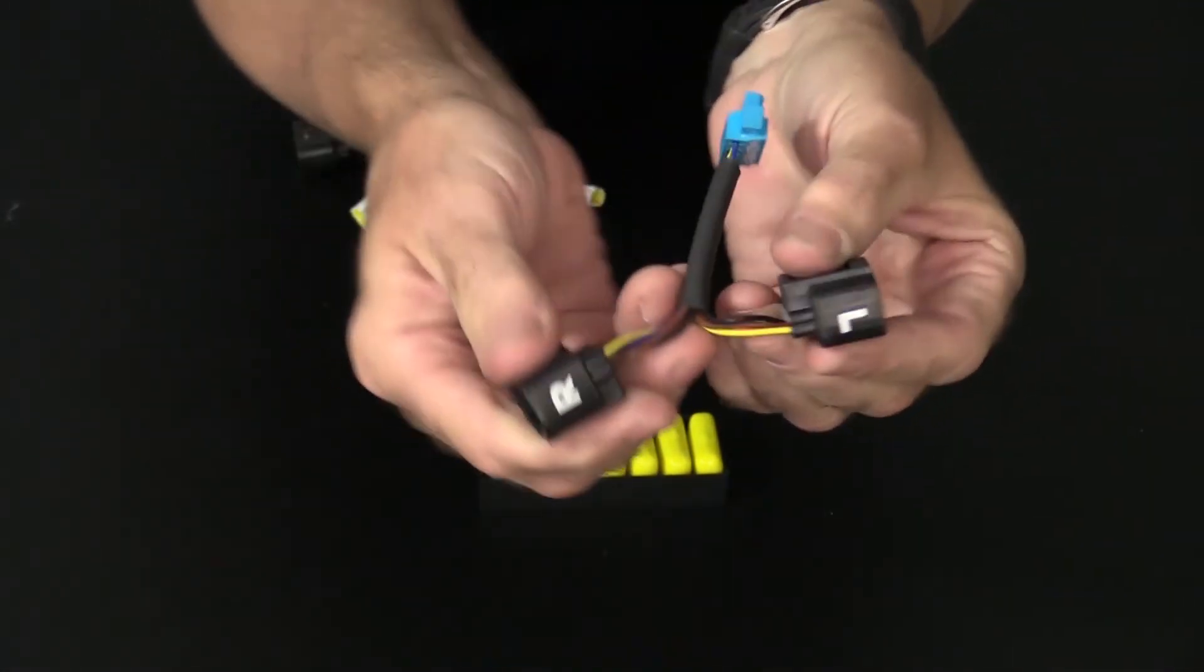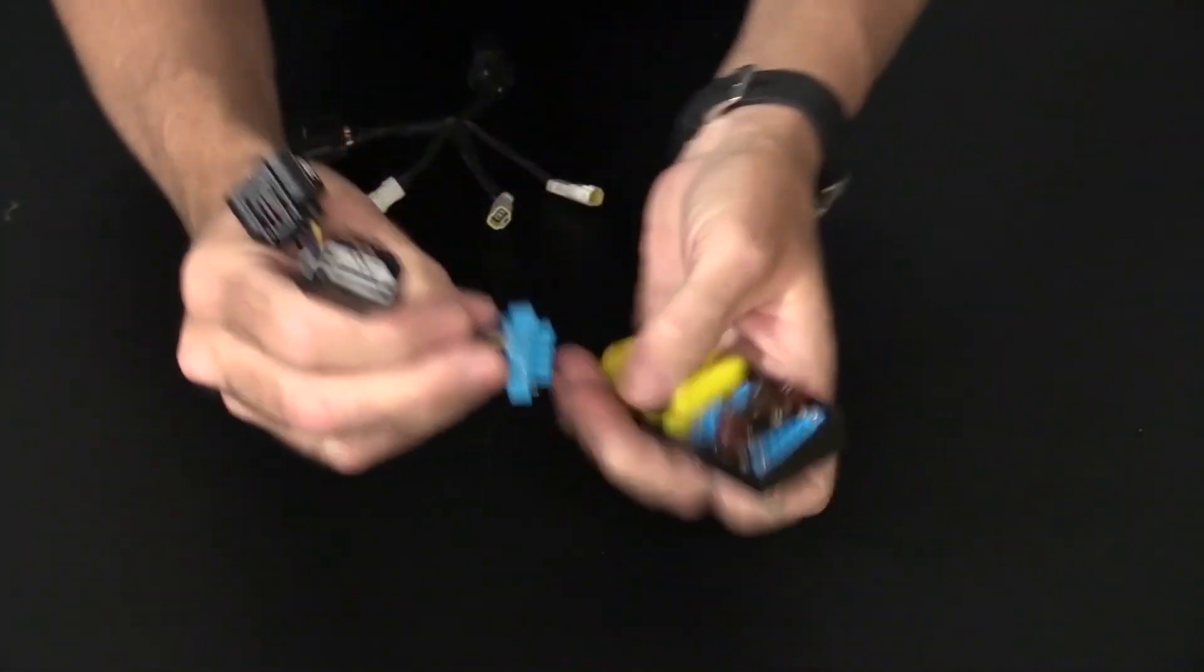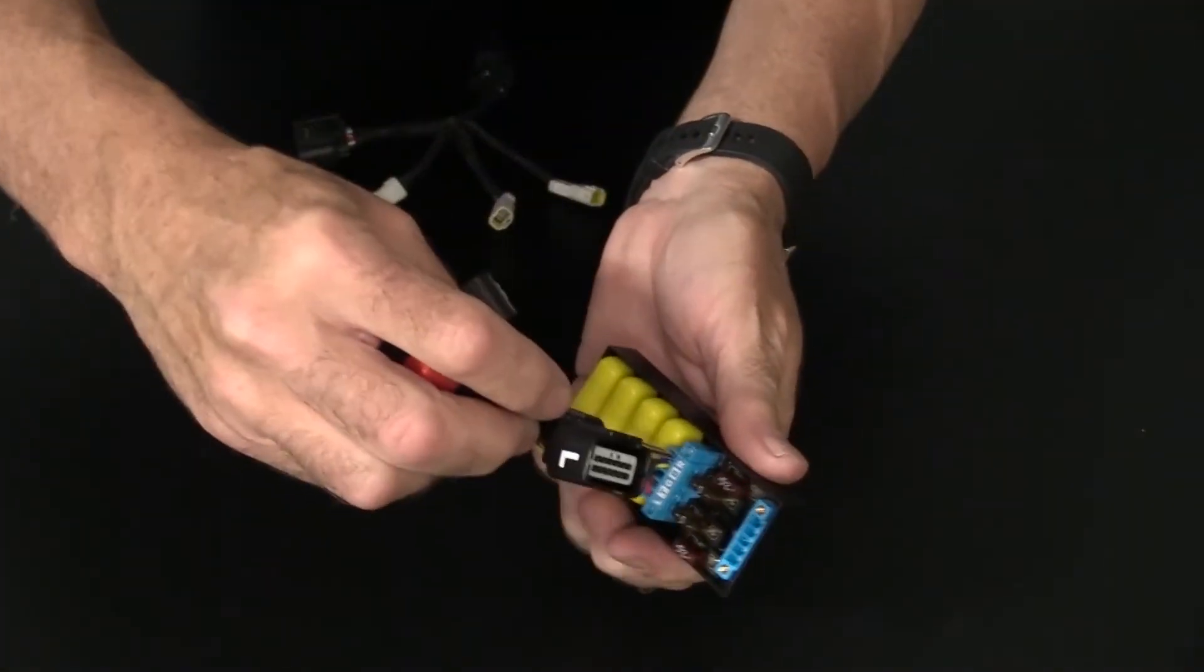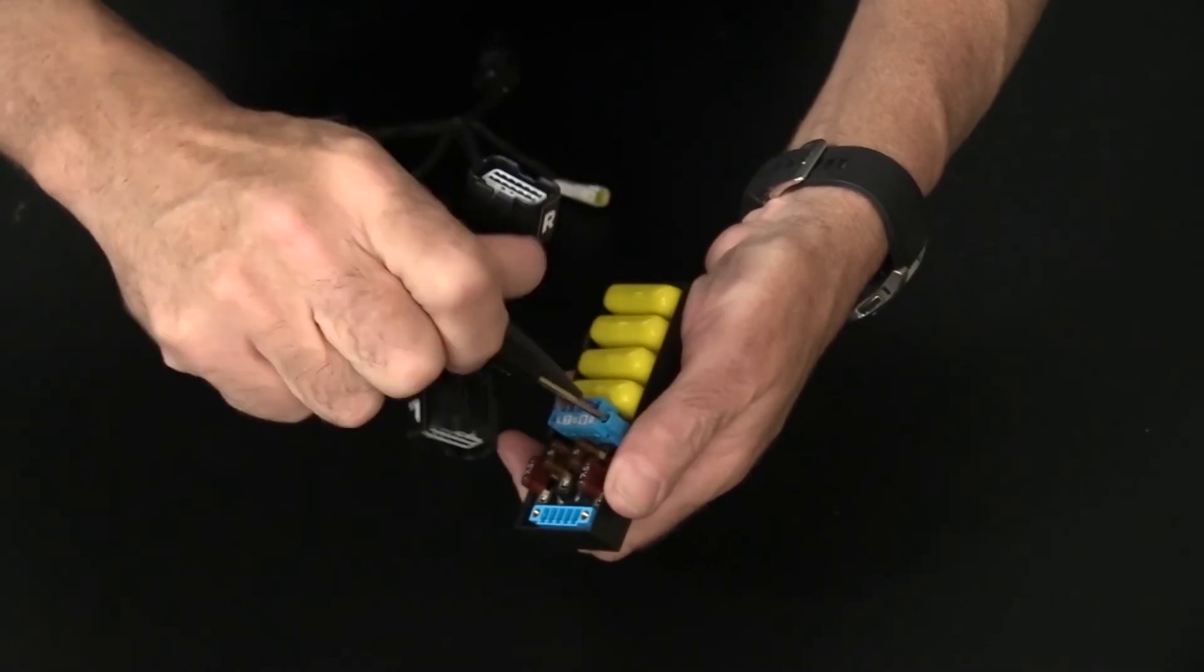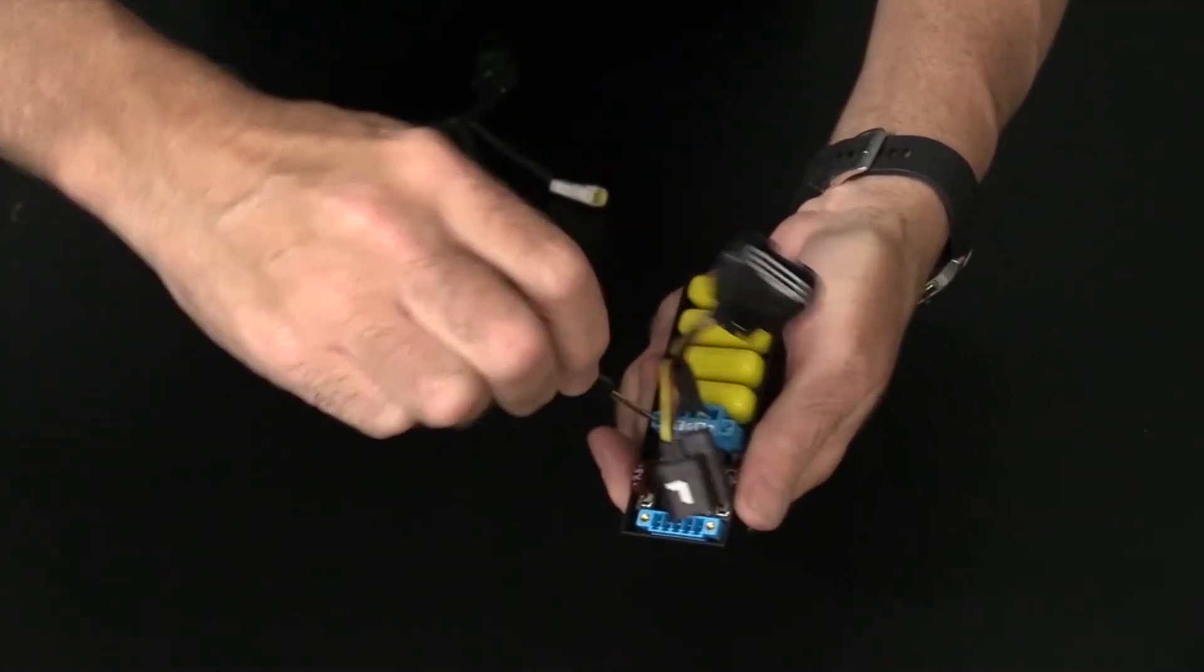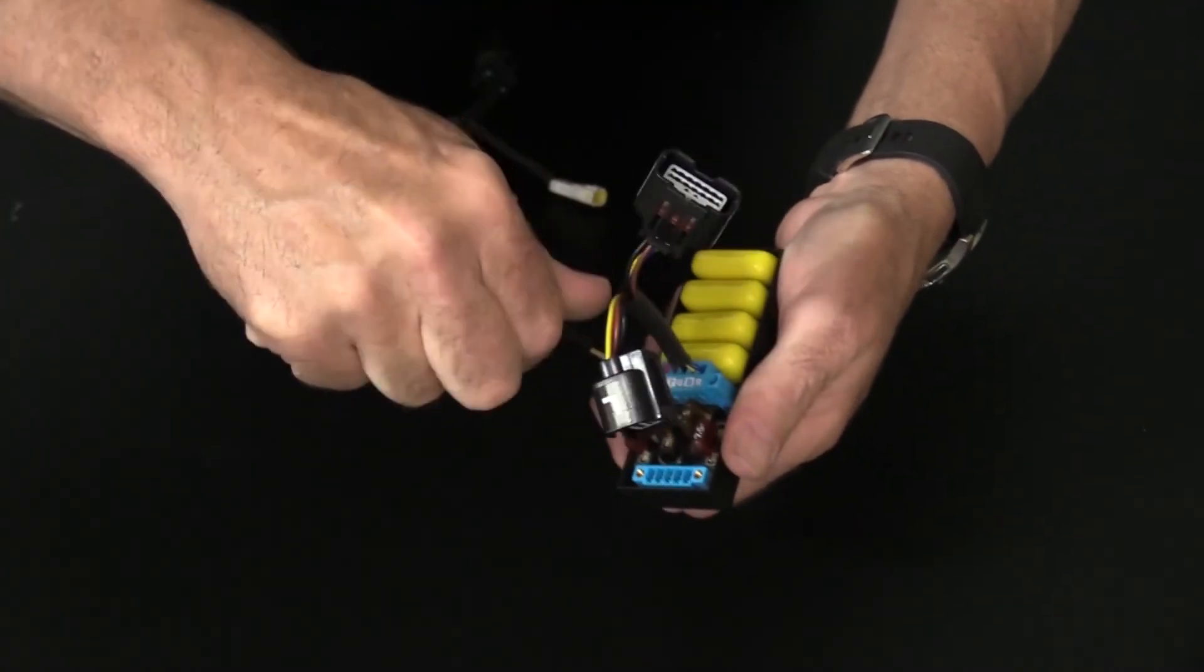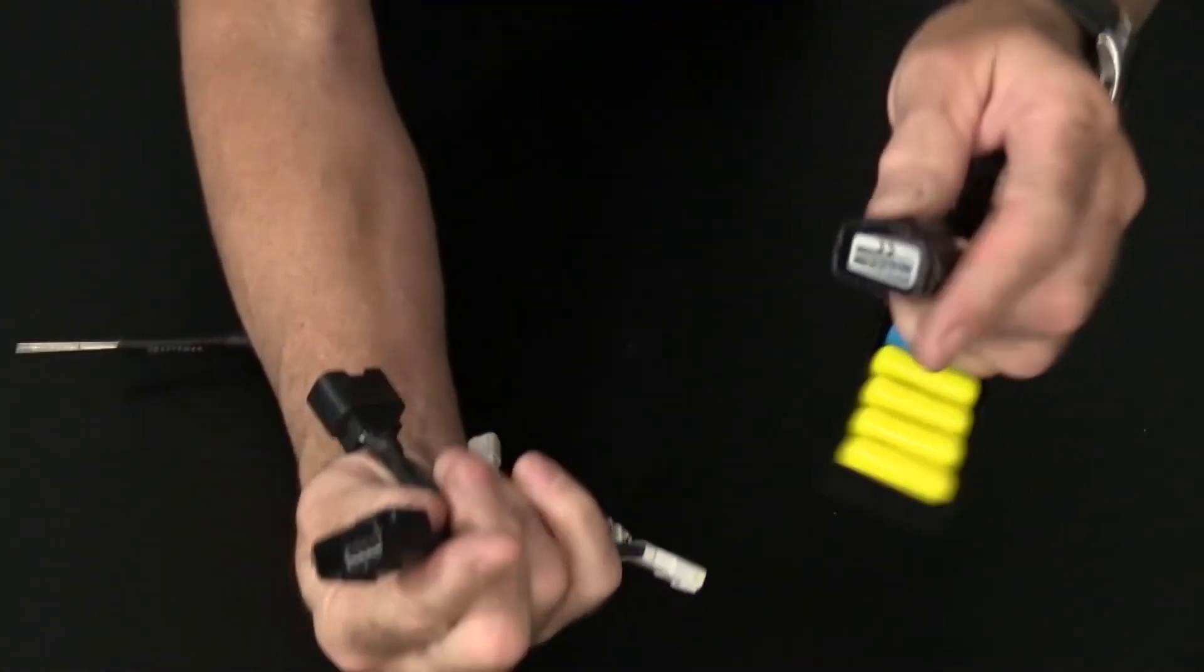Select an open position in your distribution block, insert the connector, and then tighten the screws. Now you can plug in your light wire harness simply and easily.